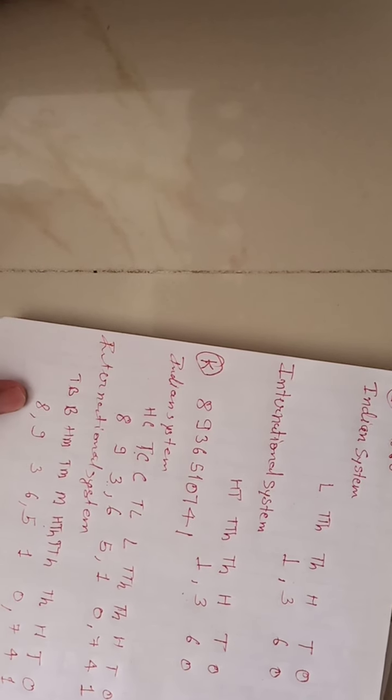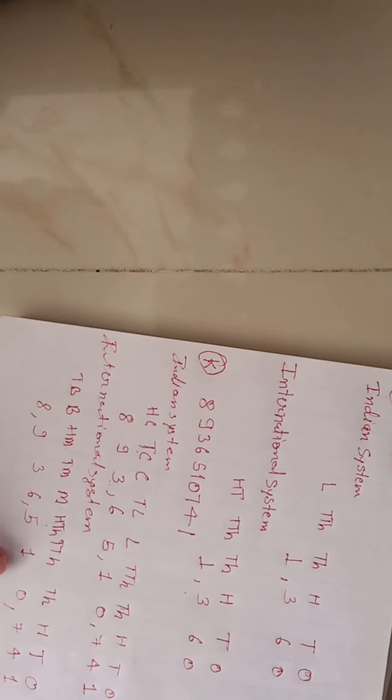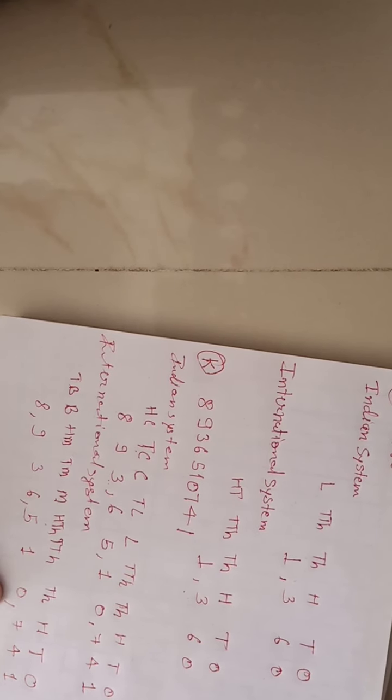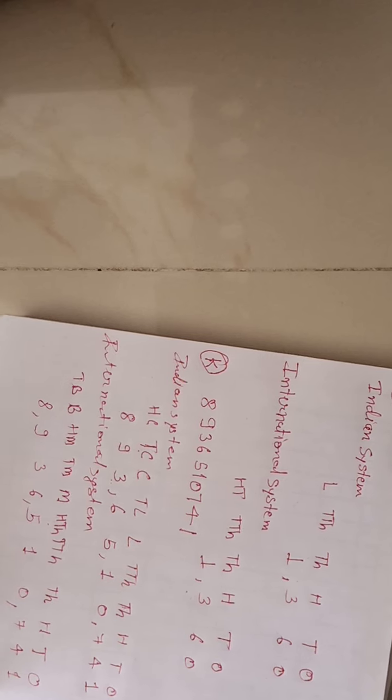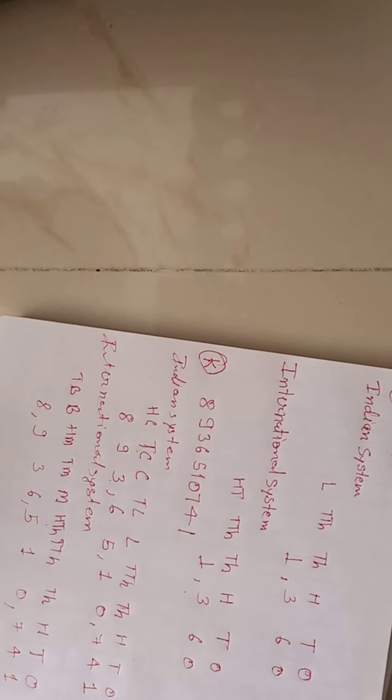So in the International system this number is written as 8,936,510,741 and read as eight billion, nine hundred thirty-six million, five hundred and ten thousand, seven hundred forty-one. In this way we place commas according to the two systems. I hope you understand, and we will solve the remaining questions in the same way.